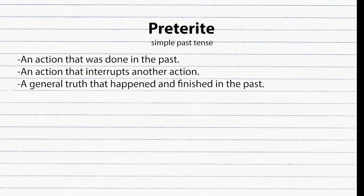Preterite. We use the preterite to talk about an action completed in the past, often with time words like yesterday, last week, or last night. It is also used for an action that interrupts another action, or a truth that happened and finished in the past.